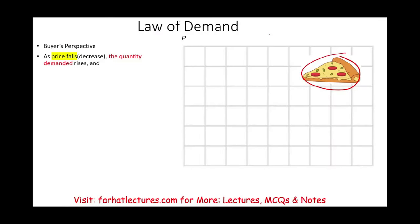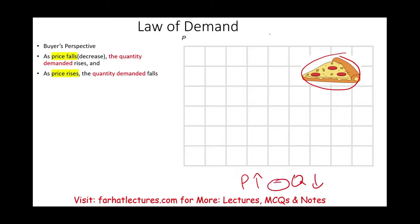As the prices fall for any particular product, the quantity demanded rises — because it's cheaper to buy, assuming you like the product and have the ability to do so. And the opposite is true: as the prices of slices of pizza rise, the quantity demanded goes down — you're going to demand fewer units. Simply put, price goes up, quantity goes down. We say there is a negative or inverse relationship.